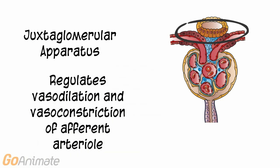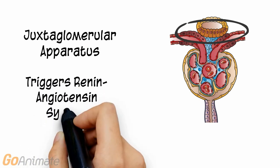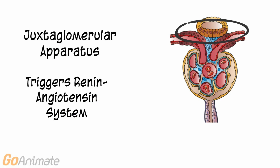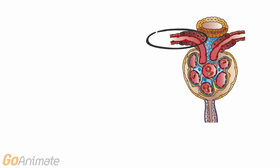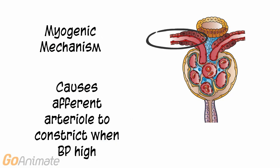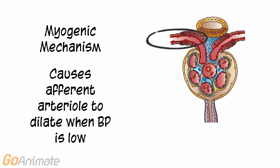The juxtaglomerular apparatus has special cells that help to regulate the diameter of the afferent arteriole by vasoconstricting or vasodilating it. The juxtaglomerular apparatus can also trigger another system called the renin-angiotensin system, which can help to increase blood pressure. There is also a myogenic mechanism within the afferent arteriole that causes increased vasoconstriction when blood pressure is high and vasodilation when blood pressure is low. This helps to regulate the amount of filtrate produced.